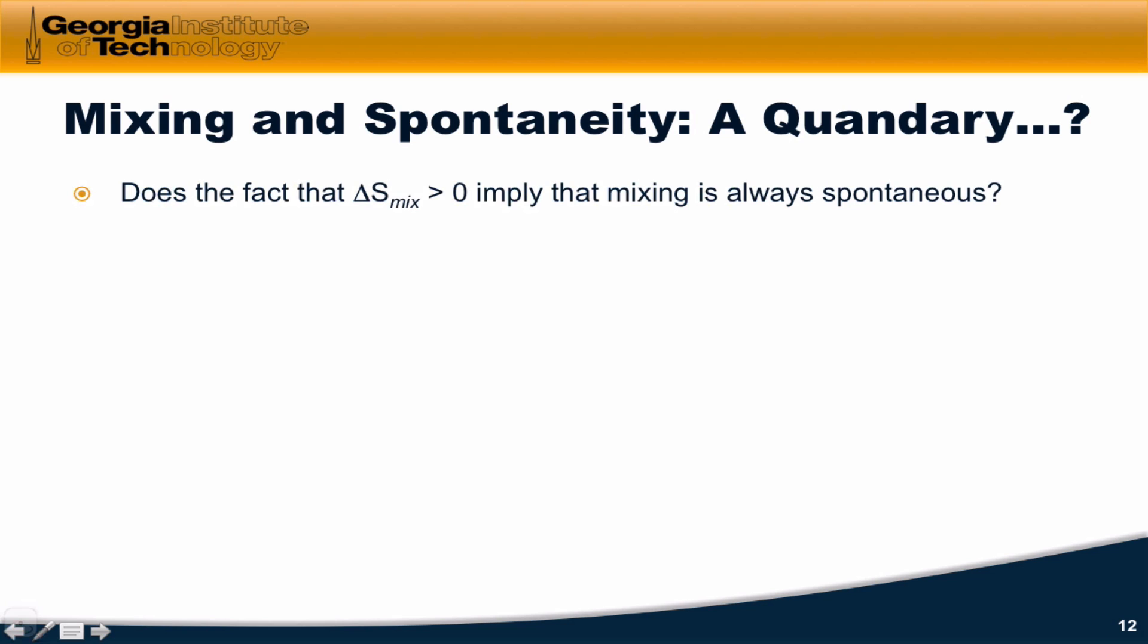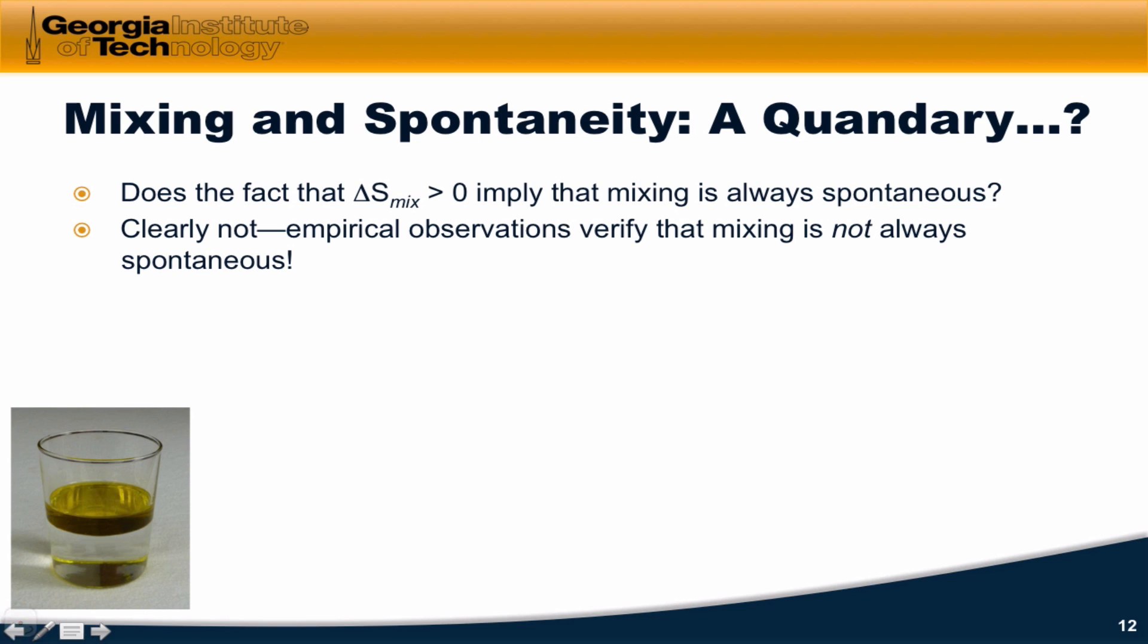So we've seen that for mixing of ideal gases within an isolated system, delta S mix is always greater than zero. Does this imply then that mixing is always spontaneous for any pair of substances, as long as we can assume they're ideal gases? Well, clearly, empirical observations tell us that no, mixing is not always spontaneous. Think about oil and water. We can let oil and water sit forever, and they will never spontaneously mix with each other.